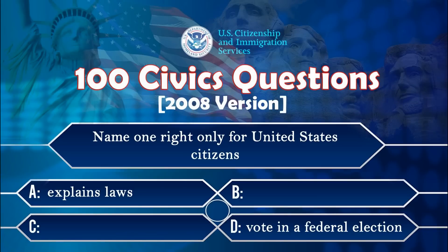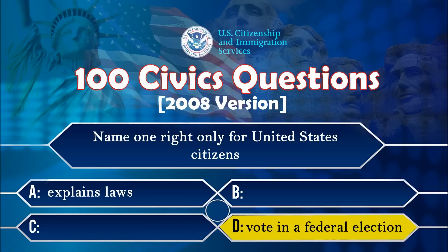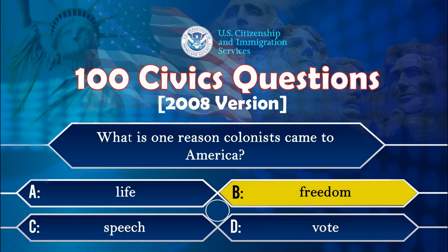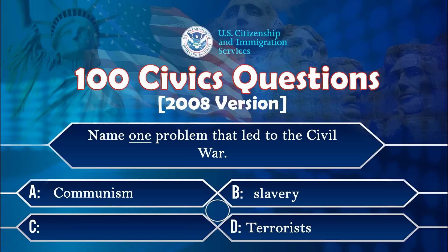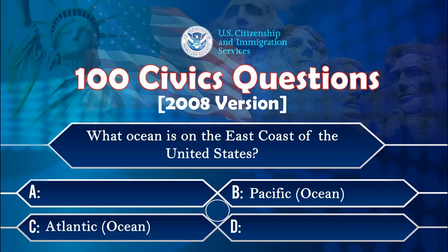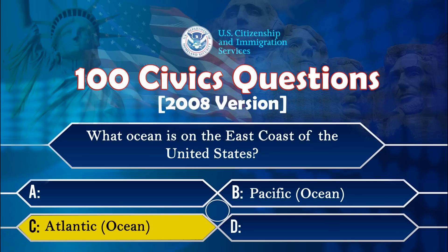Name one right only for United States citizens. Vote in a federal election. What is one reason colonists came to America? Freedom. Name one problem that led to the Civil War. Slavery. What ocean is on the east coast of the United States? Atlantic Ocean.